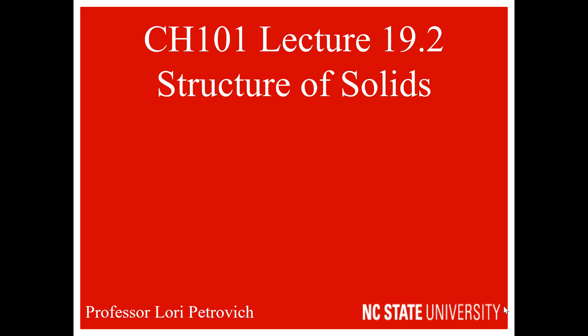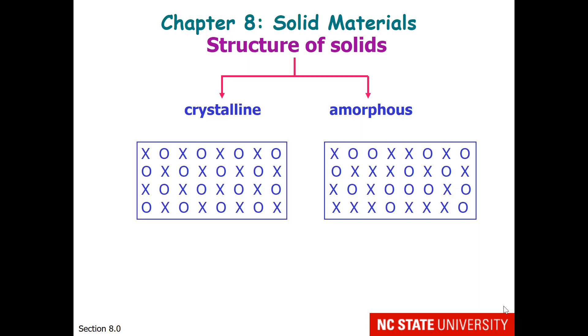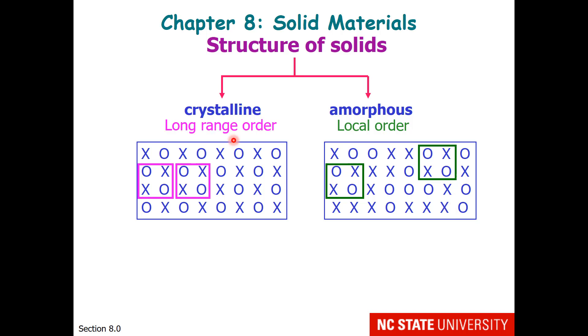We're now ready to start Chapter 8 and look at the structure of solids. Solids come in two categories: crystalline and amorphous. Amorphous solids may have a pattern of local order, but this pattern does not extend throughout the entire structure. Crystalline solids have long-range order.